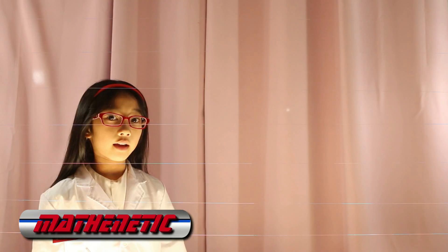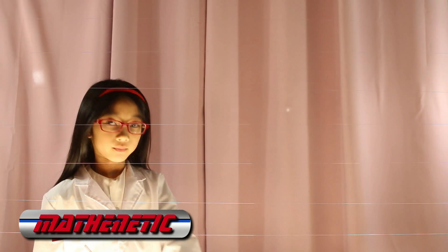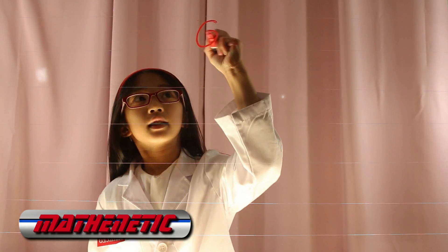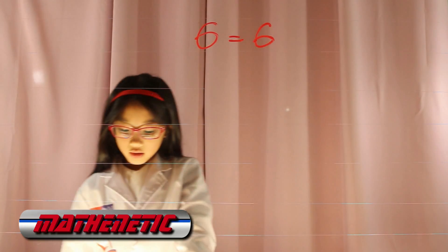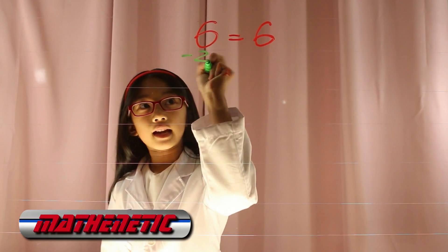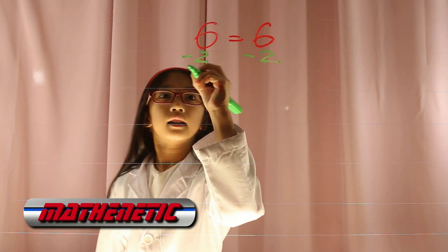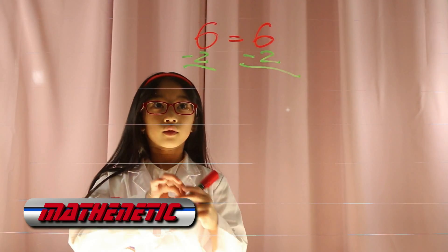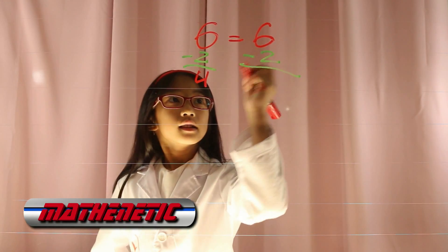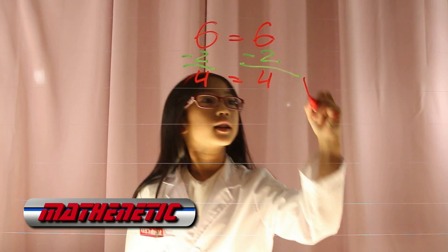Let's prove why you have to subtract on one side and the other side. Say you have 6 equals 6 and you want to subtract 2 on one side. You also have to subtract 2 on the other side. 6 minus 2 equals 4, and 6 minus 2 equals 4. 4 equals 4. Check!